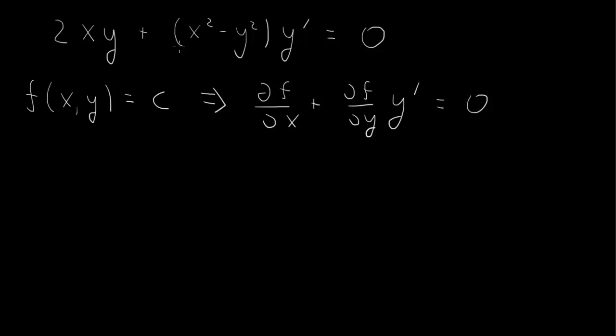If this is an exact equation, then this term here should be df/dx, and this term x squared minus y squared should be df/dy. So if we take the partial, if this is df/dx, and if we take the partial of this with respect to y, we would get 2x.